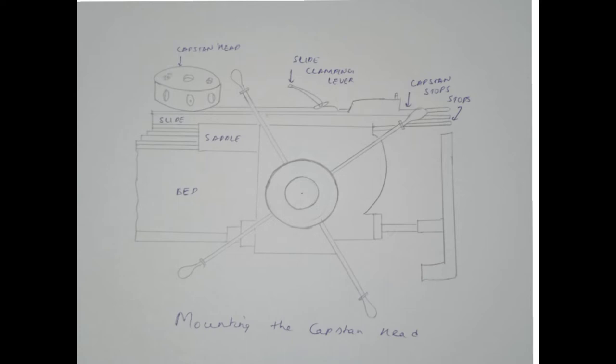The turret head mounted on the slide is usually hexagonal in turret lathe and circular or hexagonal in capstan lathe. Here in the figure, I have drawn a circular saddle to represent the same. Hexagonal turret heads have six holes, one on each face or equi-spaced along the periphery.